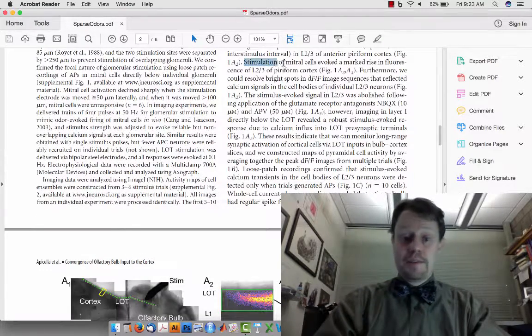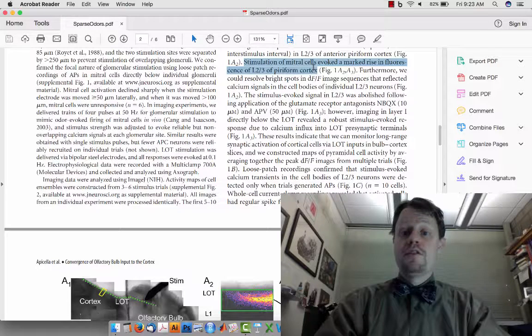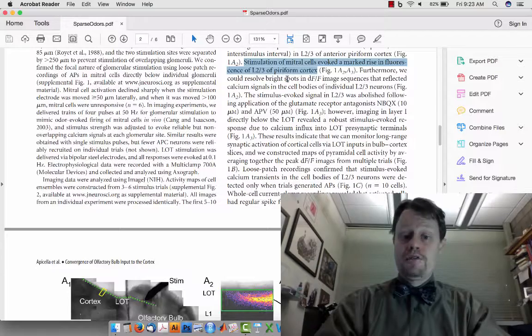So they're stimulating mitral cells which are part of the olfactory bulb and seeing a change in fluorescence in layer 2-3 of piriform cortex.